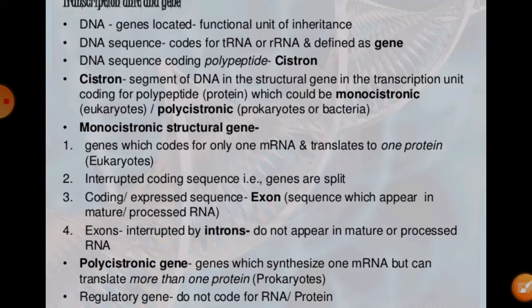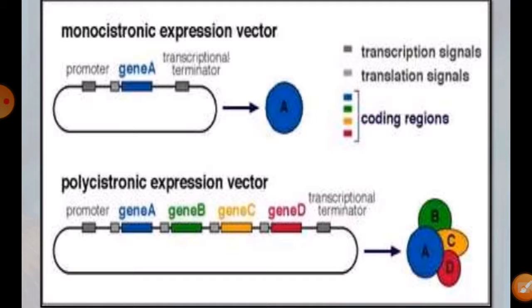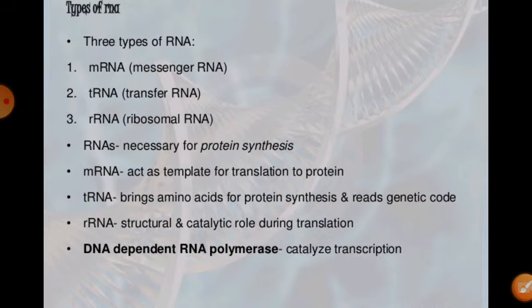The introns or intervening sequences do not appear in the mature processed RNA. Introns are only interruptions between exons. Sometimes regulatory sequences are loosely defined as regulatory genes — they do not code for RNA or protein. Some regulatory genes are found which do not appear during transcription and are not involved in developing RNA.